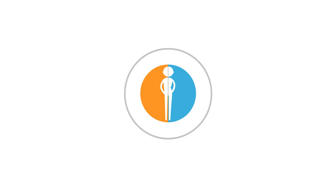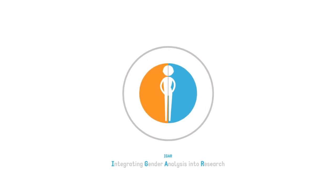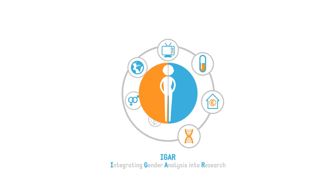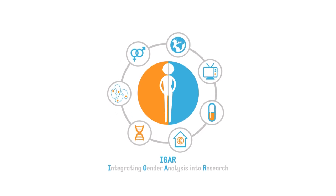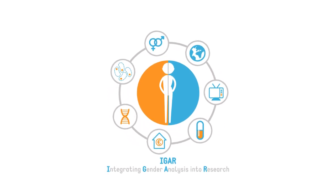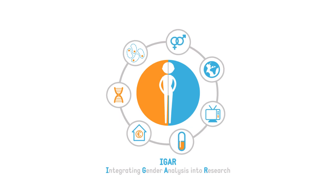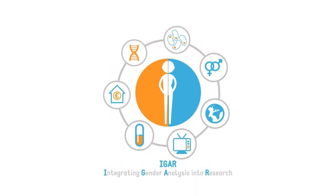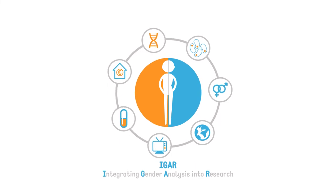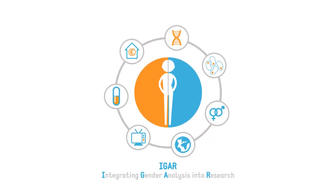Many examples show the critical need for integrating gender analysis into research. This means taking into account biological characteristics of both females and males (sex) and the evolving sociocultural features of women and men (gender), including considering intersections between sex, gender and other social categories like age, ethnicity, migration and so on.